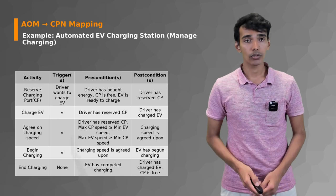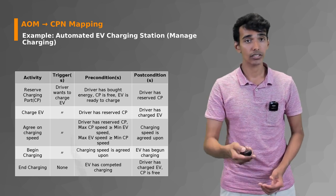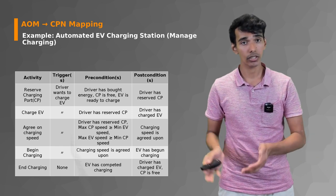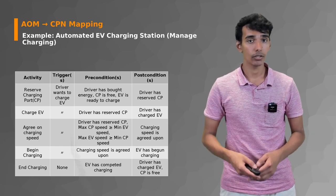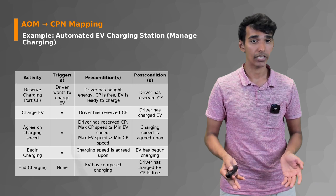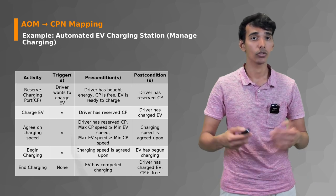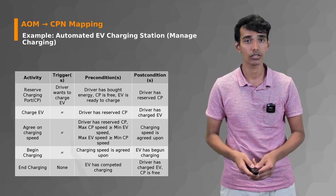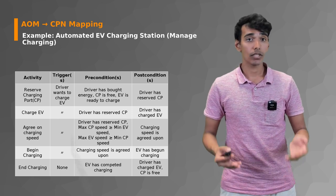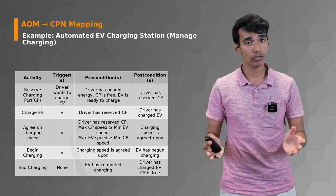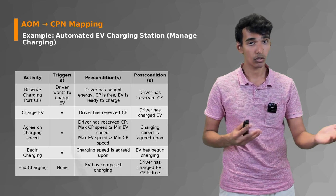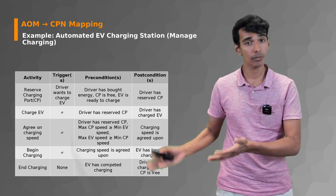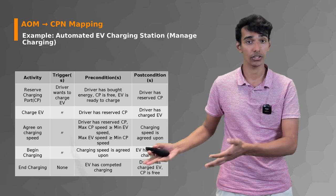We also had the behavioral interface diagram of the same managed charging component of the AOM goal model. This is a recap of what we had last time: your basic activities, triggers, preconditions, and postconditions. What we're going to do now is take this small part of your AOM goal model and behavioral interface model and map it to a CPN model that can also be executed.